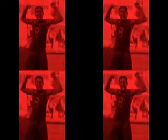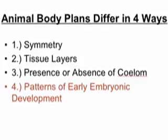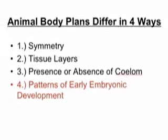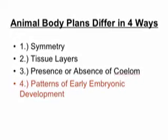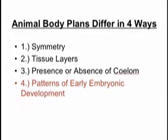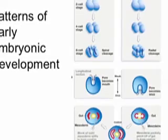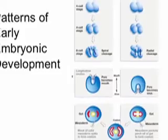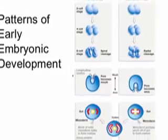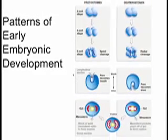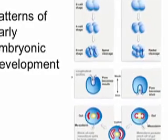Listen to the cannibal, he likes bio. You like his flow, he ain't gonna stop, so here he goes. The last way animals differ in body plans is embryonic development. Within the bilateral triploblasts are two groups: the protostomes and deuterostomes.